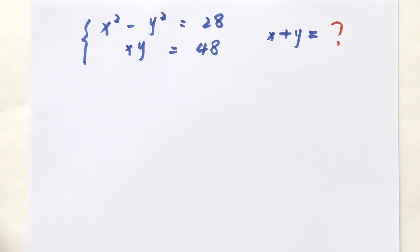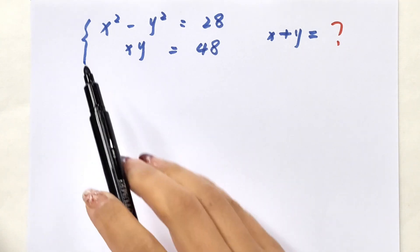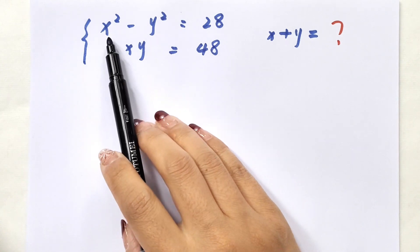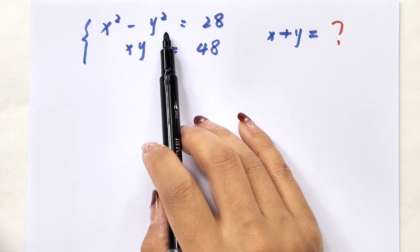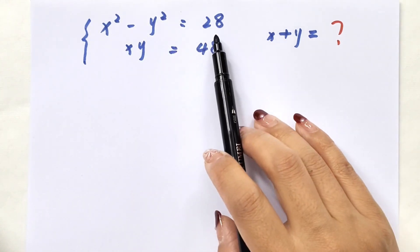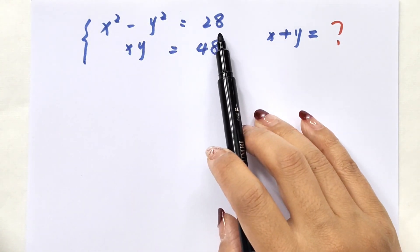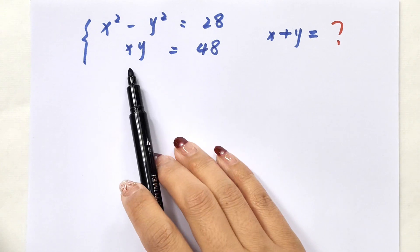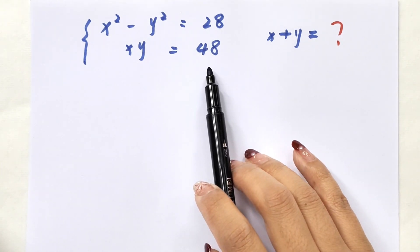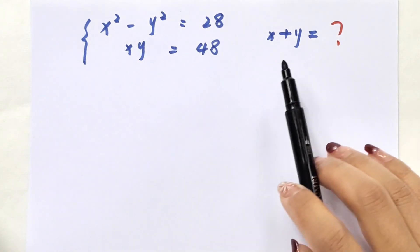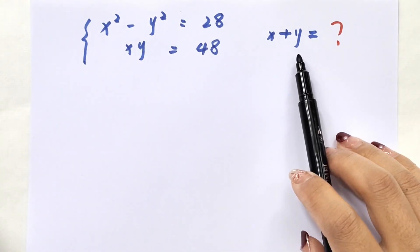Hello everyone, welcome to Math4U. How to solve x squared minus y squared equals 28, x times y equals 48, then find the value of x plus y.